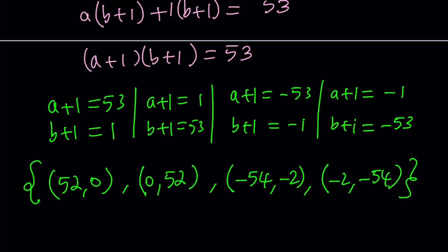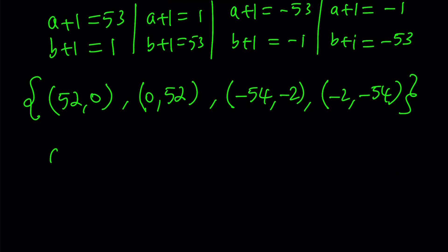But guess what? Those are the solutions, but that's not the answer. We're supposed to find a plus b. So let's go ahead and add the values. a plus b can be 52, or a plus b can be negative 56. Notice that the value of a plus b is unchanged when you switch a and b around because of symmetry.